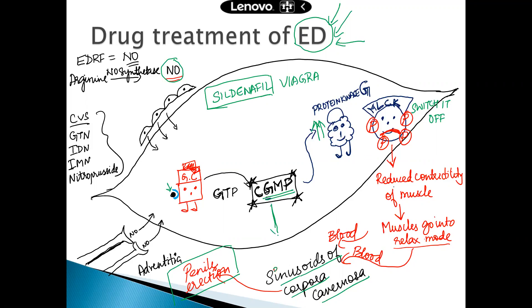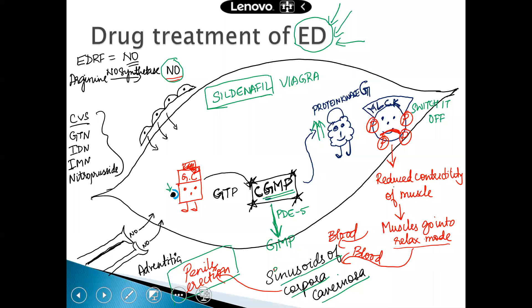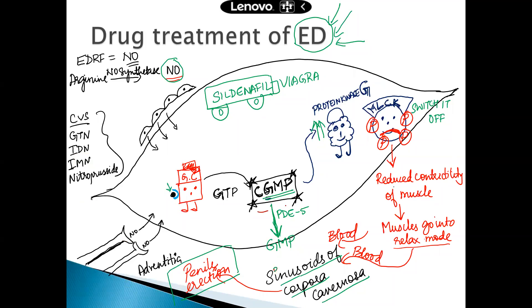Before we talk about what sildenafil does, consider this: after penile erection is complete, the cyclic GMP is destroyed by an enzyme called PDE5 — phosphodiesterase 5. Cyclic GMP is acted upon by phosphodiesterase 5 and converted into a normal compound called GMP. What sildenafil does is it causes inhibition of phosphodiesterase 5, so sildenafil can be referred to as a phosphodiesterase 5 inhibitor.